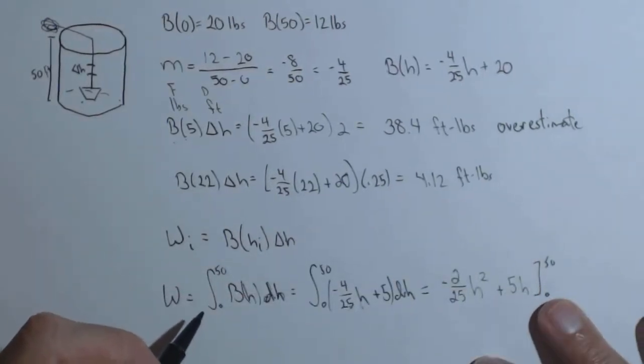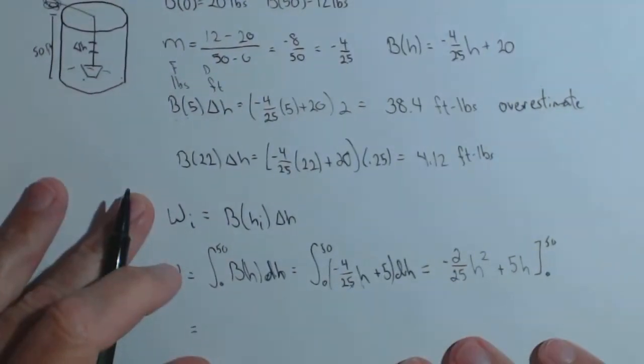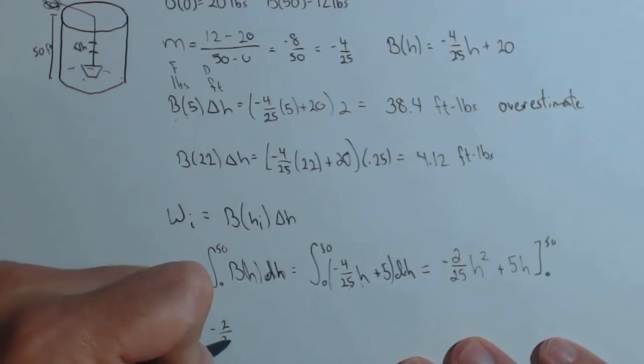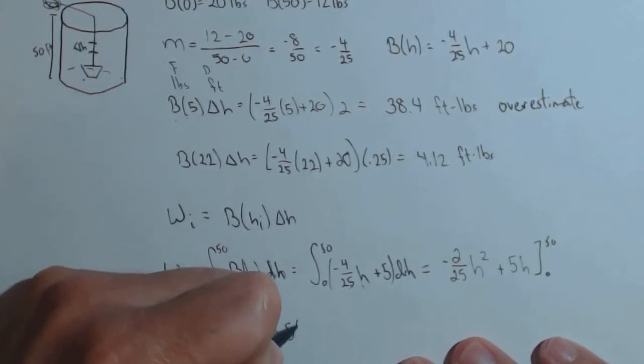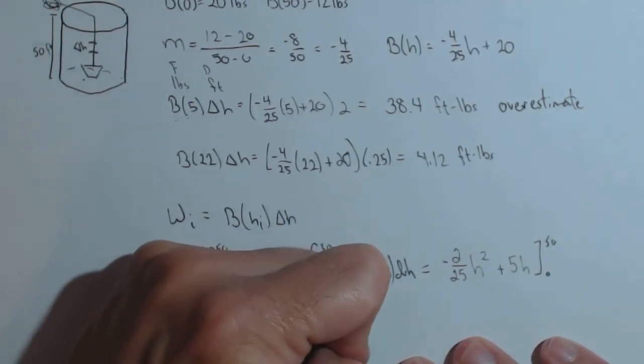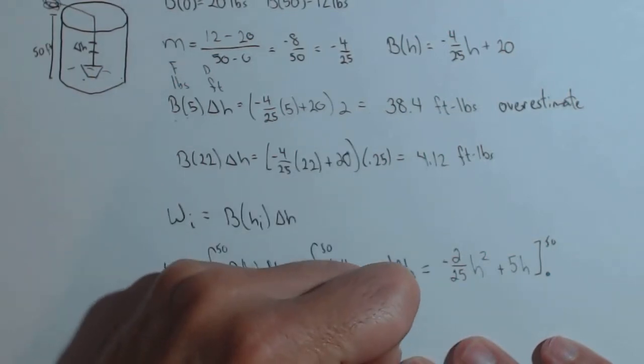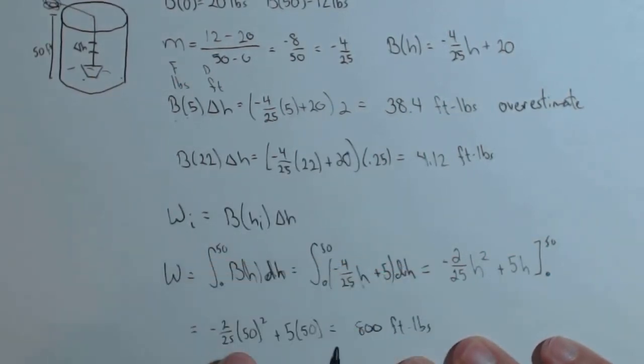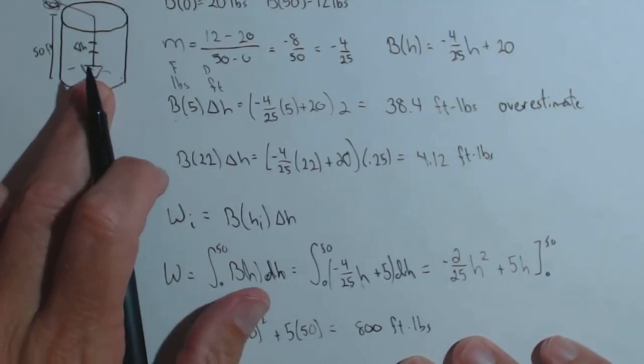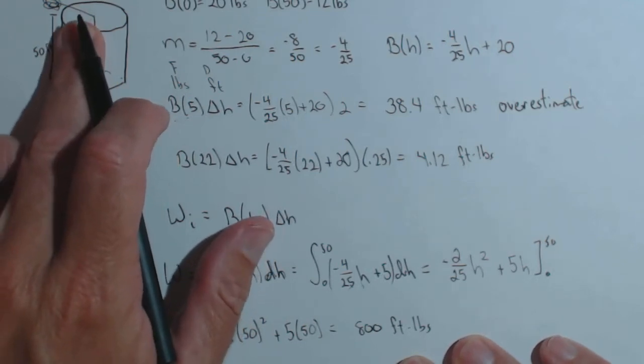Now plugging in 0 is just going to make this whole thing 0, so we really only have to plug in the 50 to get our value for the work. So minus 2 over 25 times 50 squared plus 20 times 50 equals 800. And again, units are the same as for our estimates, foot-pounds for this particular system. So that's the work that it will take to move this bucket and rope from the bottom of the well up 50 feet to the top.